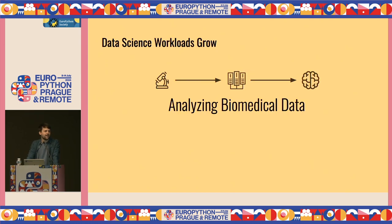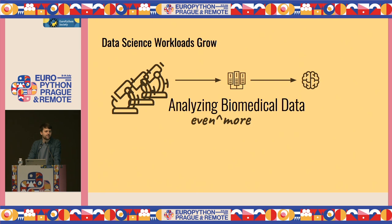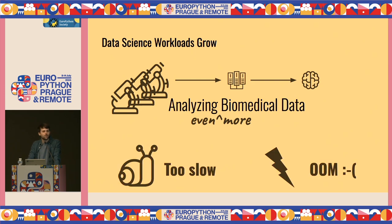We both have a pattern in our jobs: we analyze biomedical data, microscopy images. This analysis often happens in the cloud or on high-performance clusters, and then we generate insights. What happens is that the microscopes become faster, bigger, and we have more microscopes and more clients. At some point you see that your analysis pipeline that used to work really nicely is now too slow, or it runs out of memory — out of time, or out of memory. This happened to us multiple times.